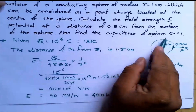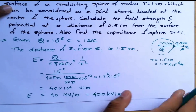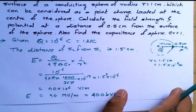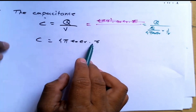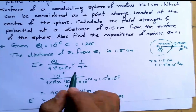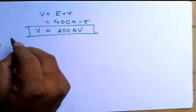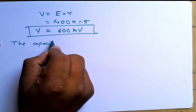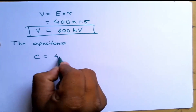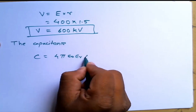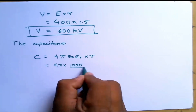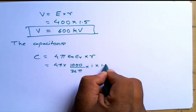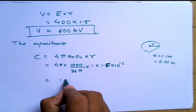The last part of this numerical asks us to find the capacitance of the sphere when εᵣ = 1. Using C = 4πε₀εᵣR, substituting 4π × (1000/36π) × 1 cm, the calculation gives C = 1.11 microfarad.